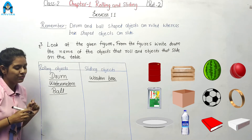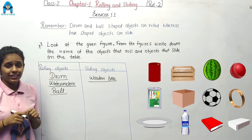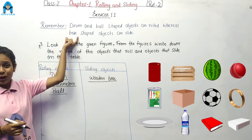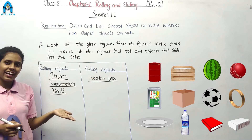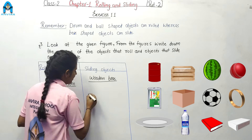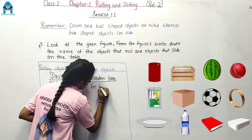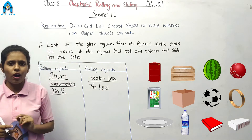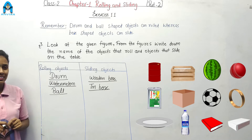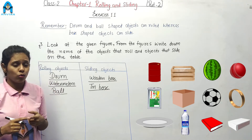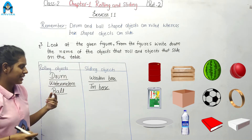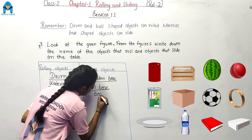Let's go to the next. This is a tin box. The shape of tin box is like a box, and box shaped objects can slide. So, tin box can slide. We write tin box on the sliding side. Next, this is a box. Box shaped objects can slide, so we write box on the sliding side.